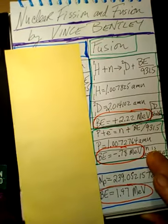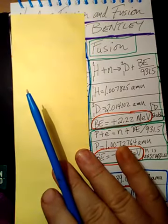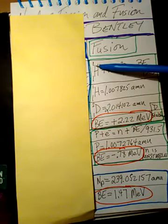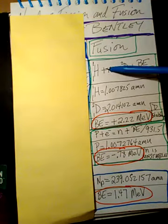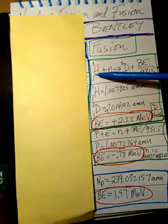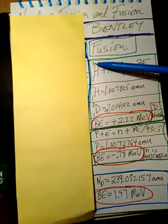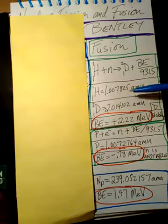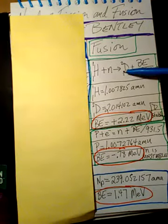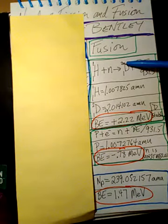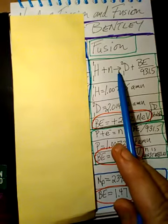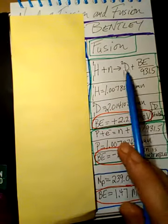Fusion is when you bring two subatomic particles together. Here we're going to take a hydrogen atom and fuse it — add it to a neutron — and make one particle called deuterium. Hydrogen is one proton with no neutrons, but deuterium has one proton and one neutron, giving it an atomic mass of two. So we take hydrogen, add it to a neutron, and get deuterium plus the binding energy of the deuterium.